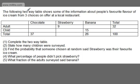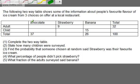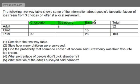So let's start off. The following two-way table shows some of the information about people's favorite flavor of ice cream from three choices on offer at a local restaurant. We've got the flavor of the ice cream and the age range — adults and children. We're asked in the first part to complete the two-way table.